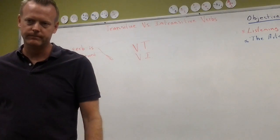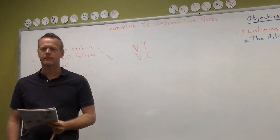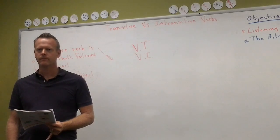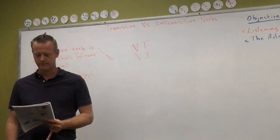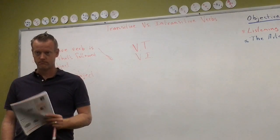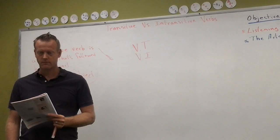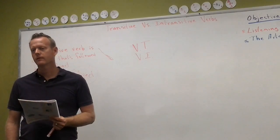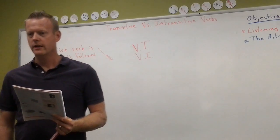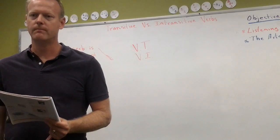Student question: How can I know if an example is transitive or intransitive? If there's no object, it's intransitive. Literally, if it has an object, it's transitive; if it doesn't have an object, it's intransitive. That's all you need to know.